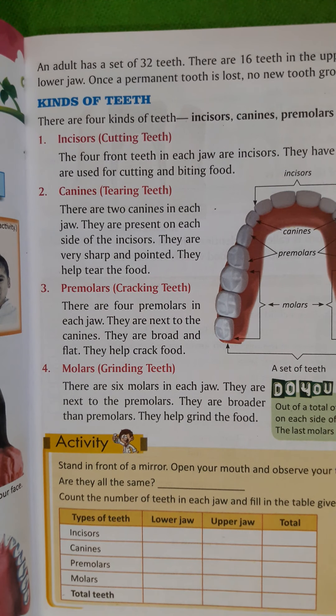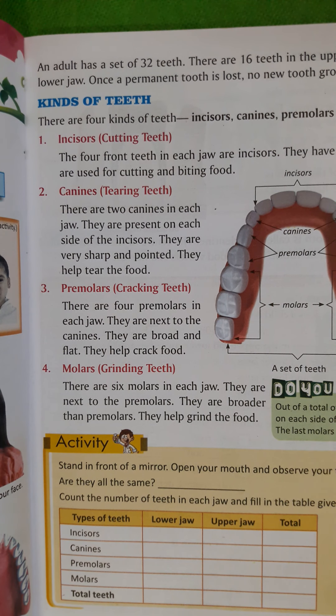Good morning class 4. Last class, we started the new chapter on teeth, and you came to know about the importance of teeth — they give shape to our face, they help us to bite food and chew as well, and they help us to speak clearly. We have two types of teeth: temporary and permanent.